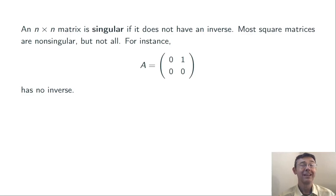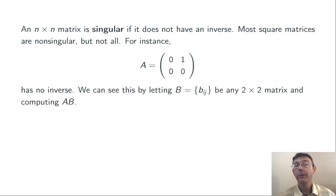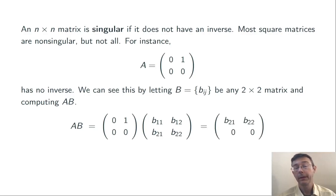This matrix does not have an inverse, and we can see that just by multiplying it by an arbitrary 2 by 2 matrix with entries B_ij. If we compute that product, for example A times B, using our usual matrix multiplication, we get B_21, B_22, 0, 0.